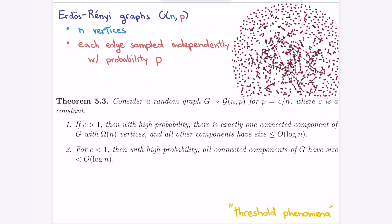This is really strong: when you go from average degree 1.00001 to 0.99999, the way the graph looks completely changes — from having no big component to exactly one big component. This is called a threshold phenomenon: there's a magical threshold of one with qualitatively different behavior above and below it.